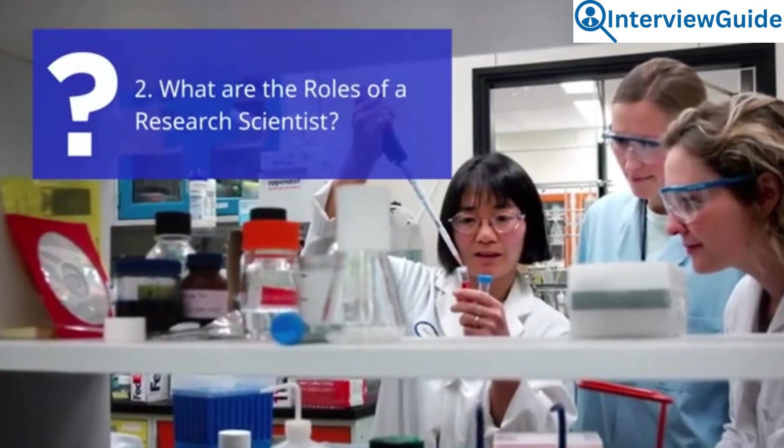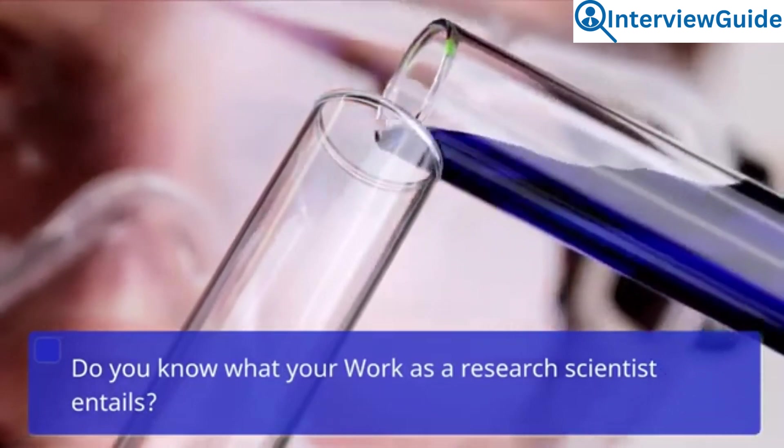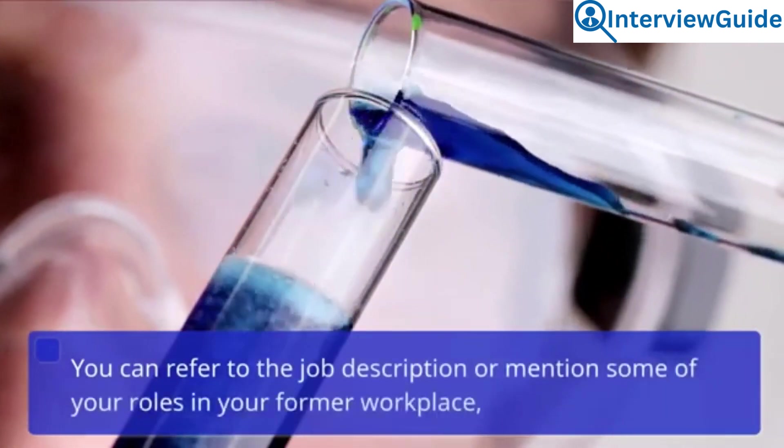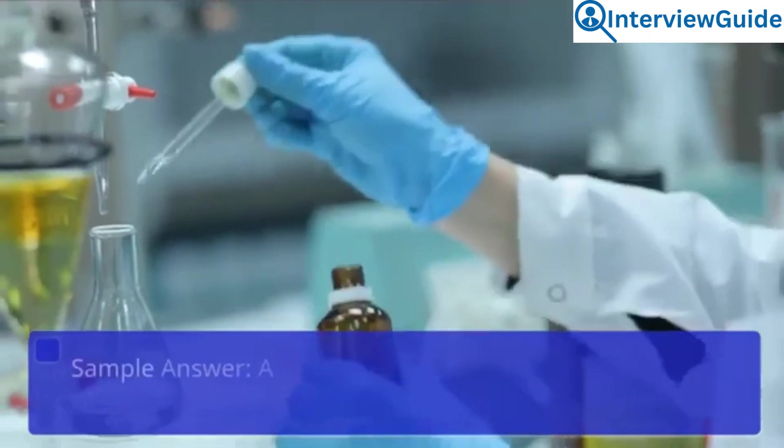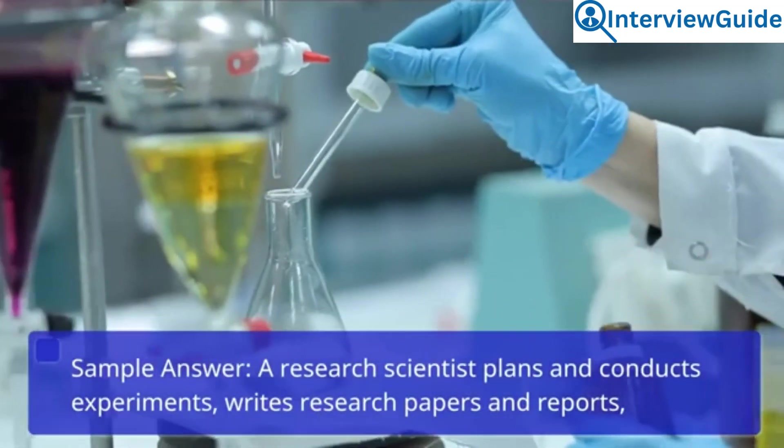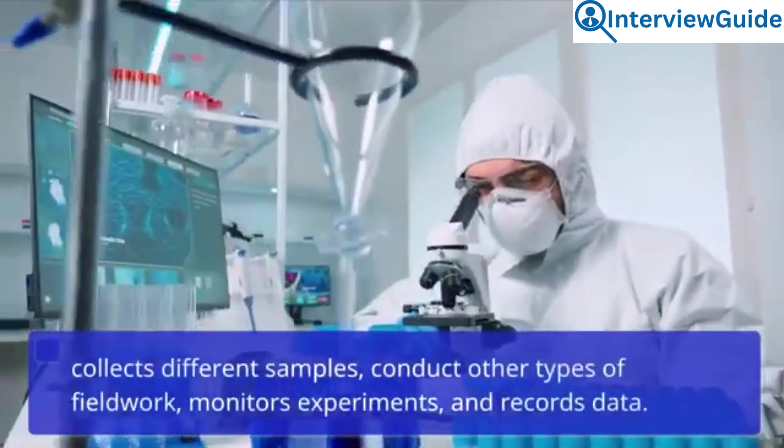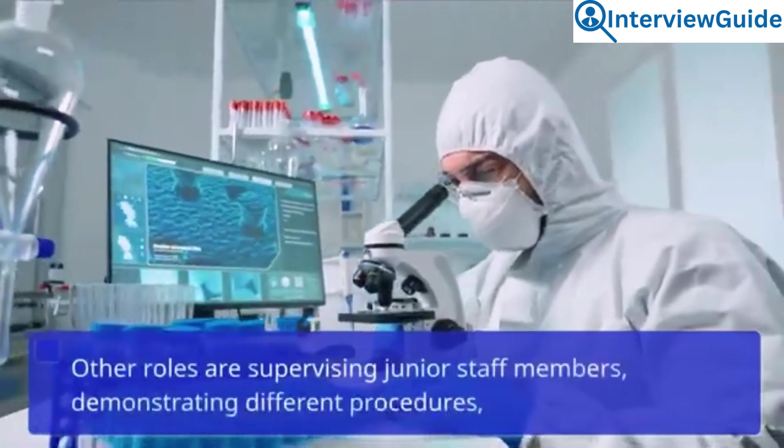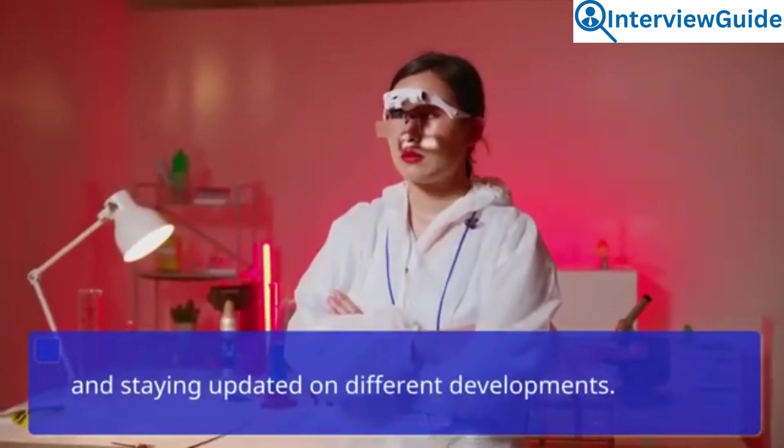Question 2: What are the roles of a research scientist? Do you know what your work as a research scientist entails? The interviewer wants you to mention some of your mandates. You can refer to the job description or mention some of your roles in your former workplace, provided that it relates to the role. Sample answer: A research scientist plans and conducts experiments, writes research papers and reports, collects different samples, conducts other types of field work, monitors experiments, and records data. Other roles are supervising junior staff members, demonstrating different procedures, and staying updated on different developments.